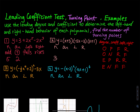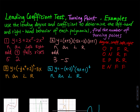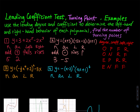For the leading coefficient, you multiply this times this times this: 1 times negative 5 times negative 1, so the leading coefficient is negative 5. The leading degree is odd and the leading coefficient is negative, so it rises to the left and falls to the right.